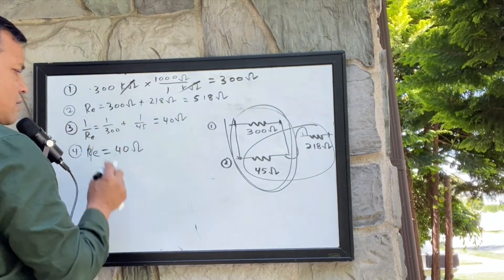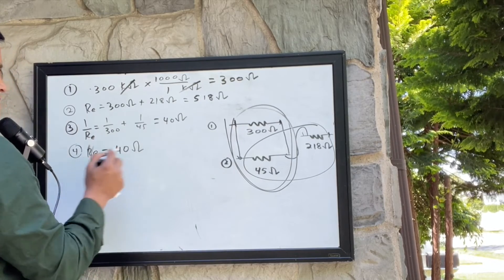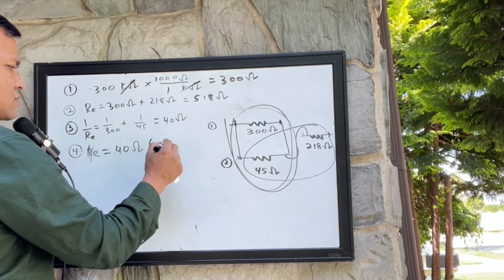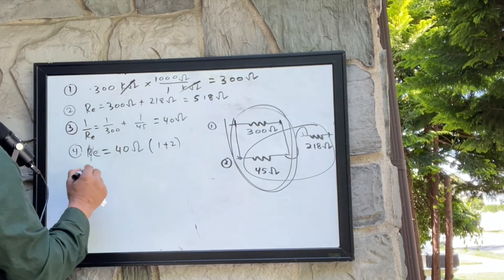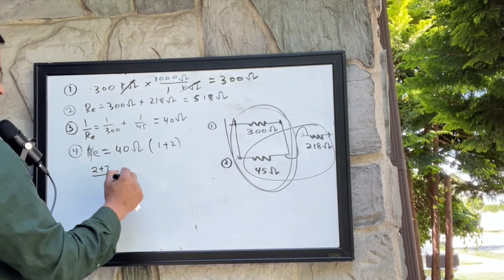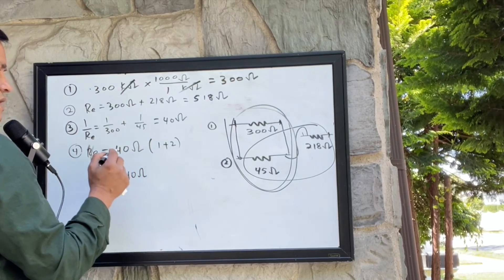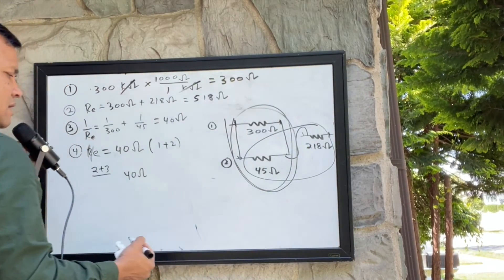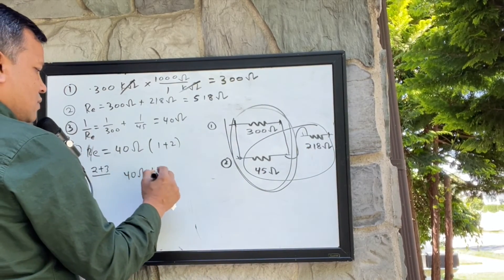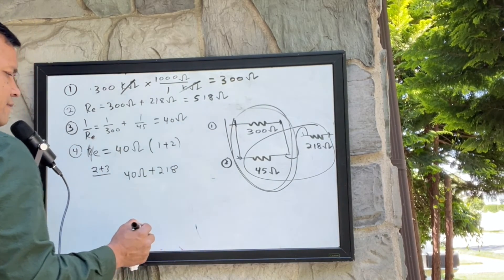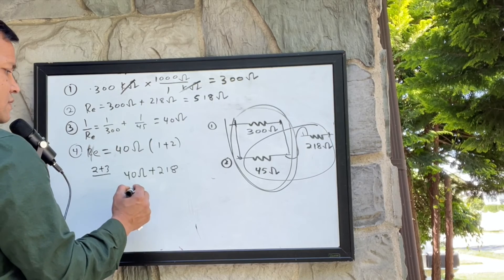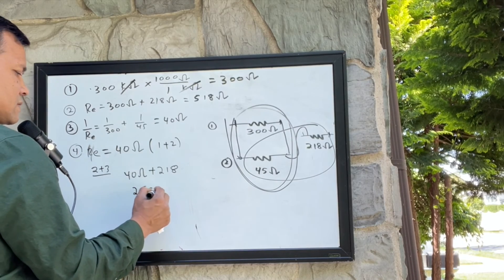And then you have 40 ohms and the equivalent resistance for this is one plus two plus three. Two plus three would be 40 ohms because this one and this one is in series relation, plus 218. So 258, you have 258 ohms.